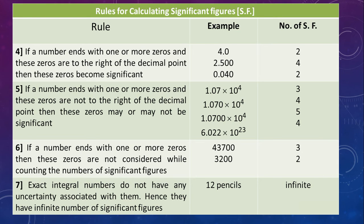We continue with the rules. Rule number 4. If a number ends with one or more zeros and they are to the right of the decimal point, zeros are to be counted. So, 4.0 has significant figures 4 as well as 0. 2.500 has significant figures 2, 5, 0 and 0. Third example is quite interesting. 0.040 has only significant figures 4 and 0. Rule number 5. If a number is written in scientific notation, the powers of 10 are not to be considered. So, for example, 1.07 will have significant figures 1, 0 and 7. 1.070 will have significant figures 1, 0, 7 and 0.